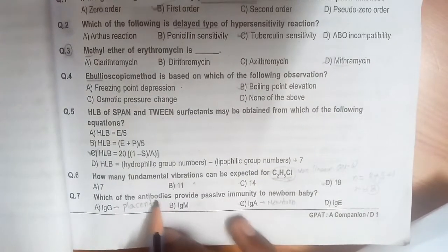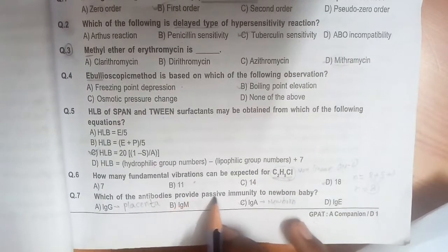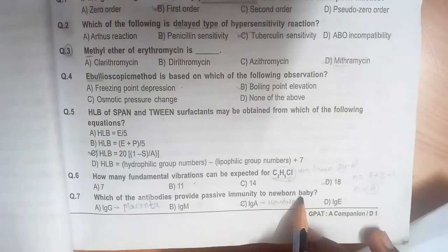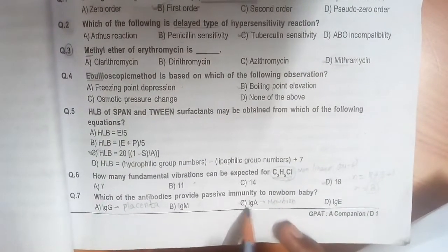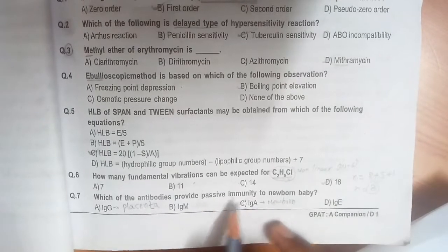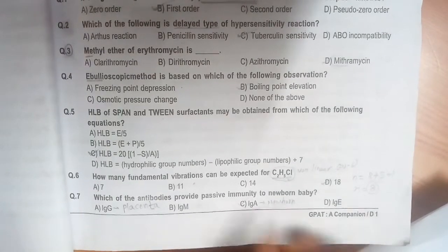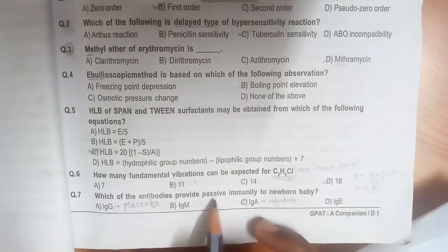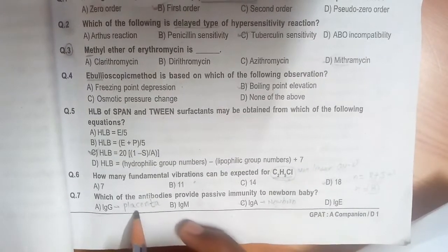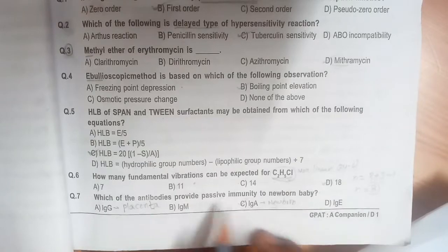Which antibody provides passive immunity to newborn babies? Here these two points are very important: IgA provides passive immunity to newborn babies, and IgG gives passive immunity through the placenta. These two are very important.